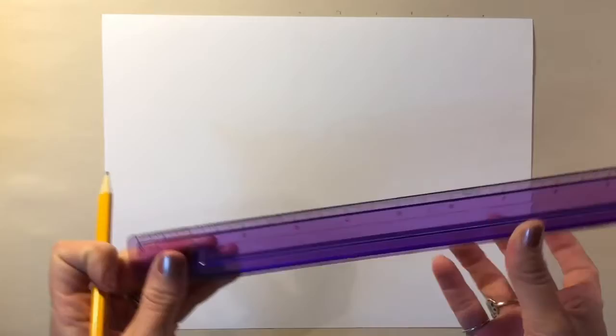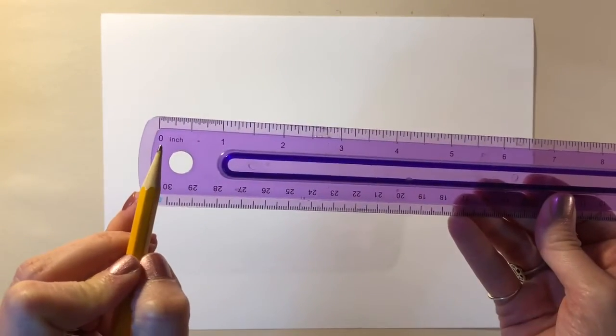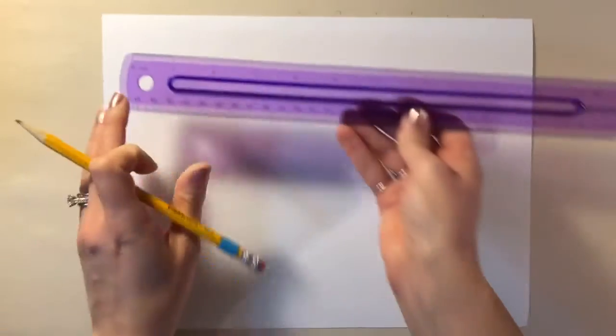I'm going to begin by taking my piece of paper and turning it horizontally. With my ruler, I'm going to look and see where the zero is, and I'm going to place that zero line up against that very top edge.